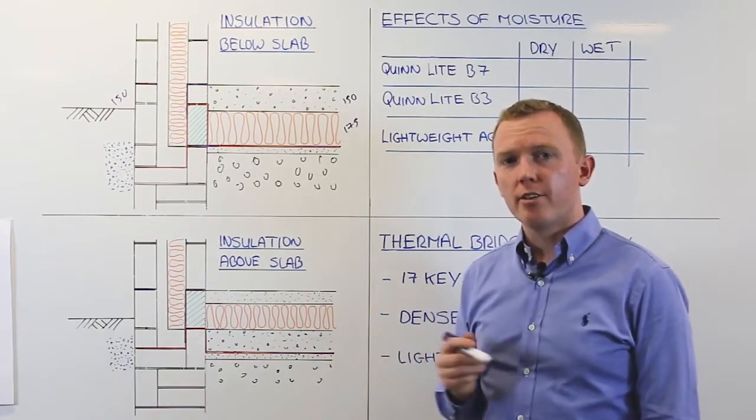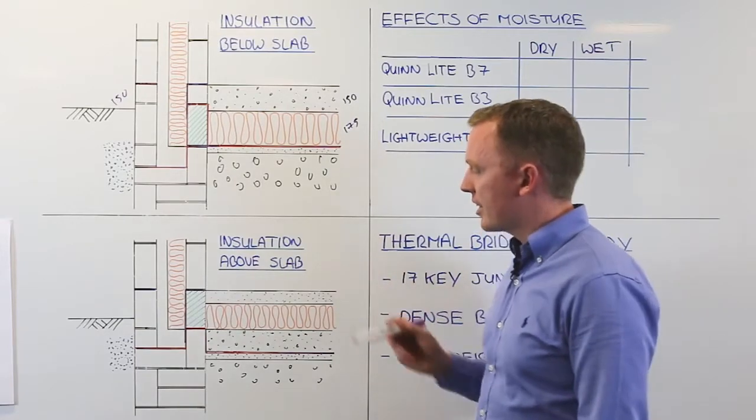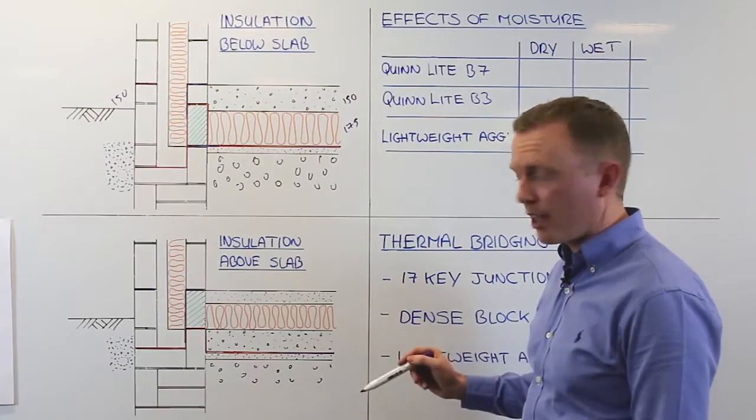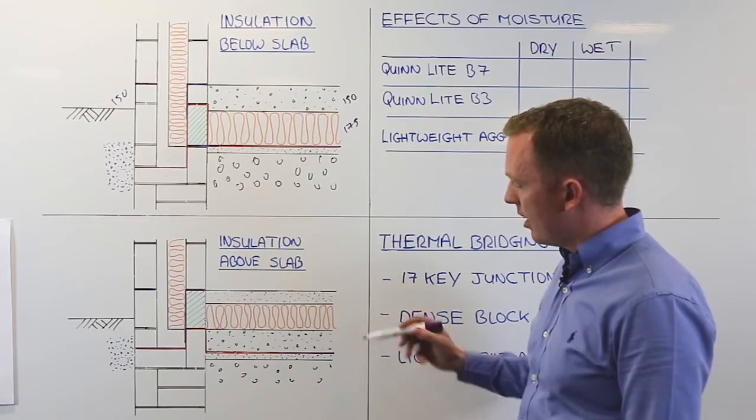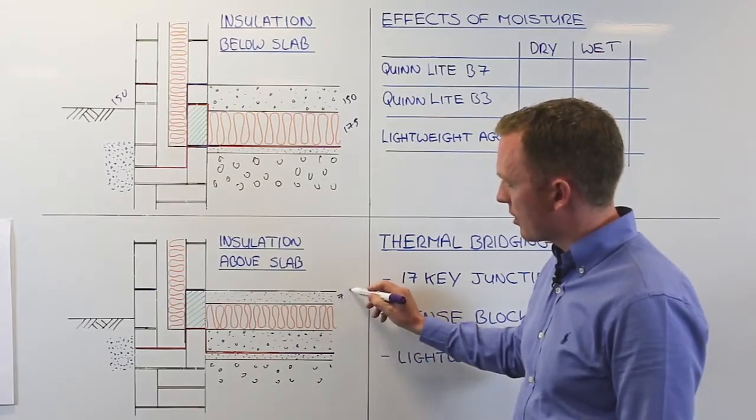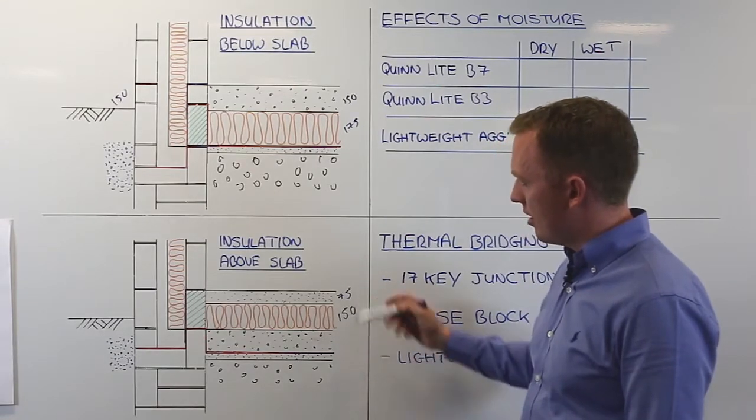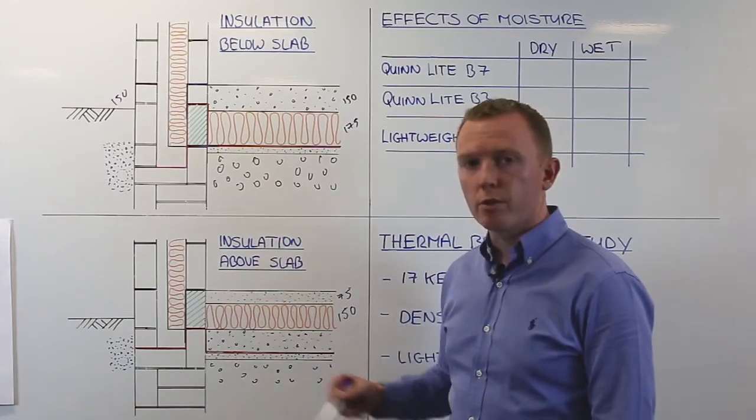So we look now at a second common floor construction. So here we have insulation above the slab. We have our concrete subfloor here, we have our insulation and our screed. Here I have shown 75mm of screed and 150mm of insulation, which adds up to 225 which again coincides with blockwork coursing.